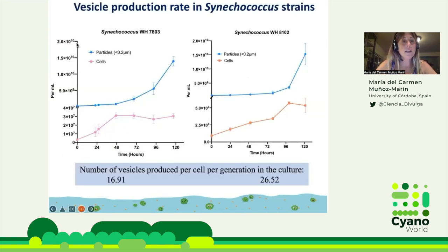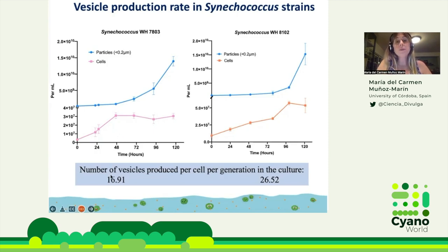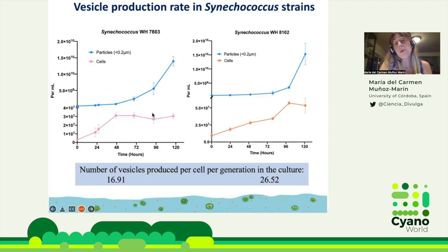Here you can see particles and cells per milliliter versus time, with daily samples for WH7823 and 8102. These are the cells and these are the particles. Since cultures are axenic and we verified there were no viruses, we assume all particles below 0.2 micrometers are vesicles — though we still need to confirm by TEM. We observed that the number of vesicles produced per cell per generation was almost double in the 8102 strain, and the number of vesicles increased with cell growth. When cells begin to die, we stop measuring vesicles because lysis particles can be confused with vesicles.